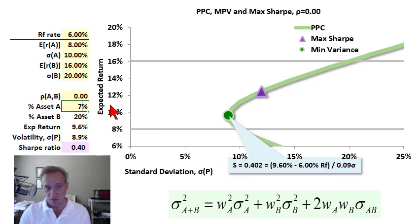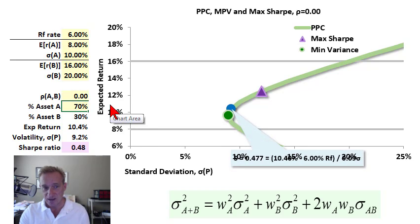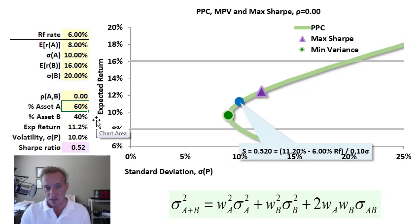And now I'm going to keep going by reducing allocation to A, increasing to B. And you can see I'm moving up now the concave segment of this curve. We were down here in the convex segment, and I'm going to go to 60-40.